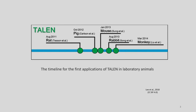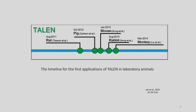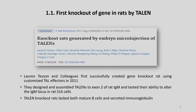Let us see the timeline for the first application of TALEN in laboratory animals. Rat was the first animal in which TALEN was applied, in August 2011 by Tesson et al. Then the next year, Carlson et al. used it in pigs in 2012, and in 2013 in mouse by Sang et al., and also rabbit by Sang et al. the same year. In 2014, Liu et al. used this technology in monkeys.